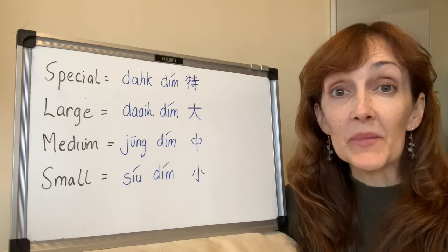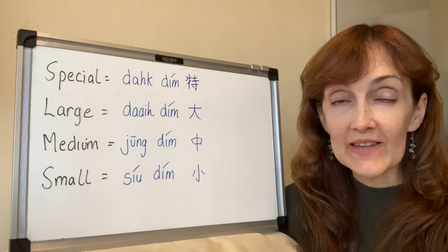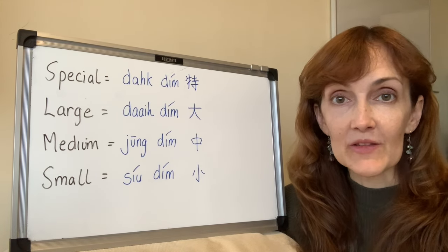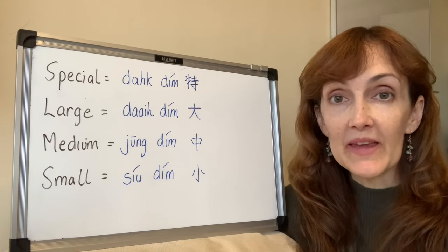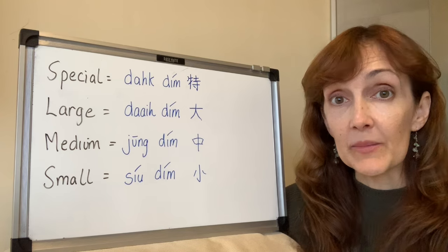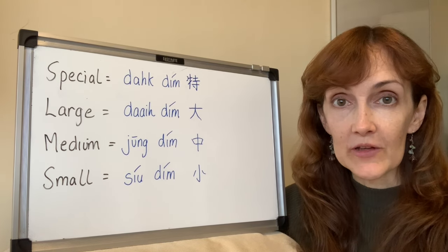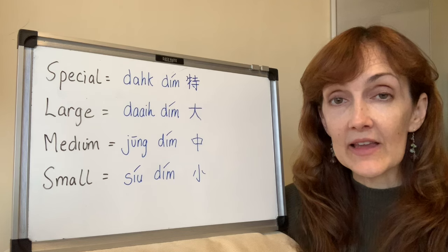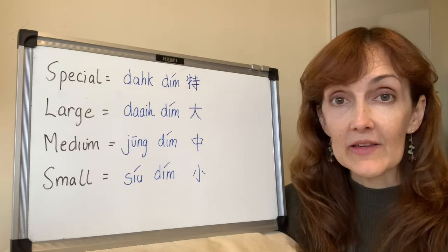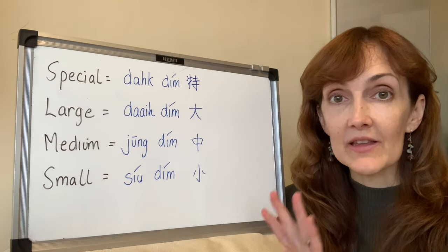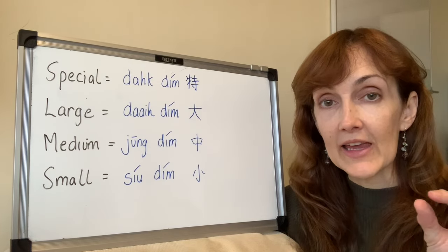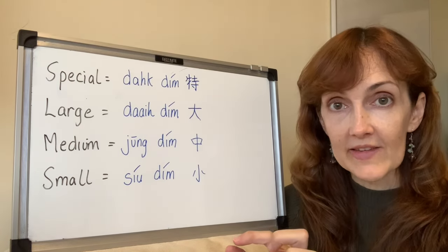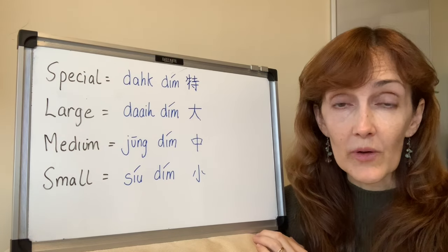Now let's talk about how your dim sum is priced. On your dim sum zi, the different colored — or maybe just white — piece of paper that lists all the different dim sum, you're not going to see an individual price next to each one. The way it's done is that a character is placed next to each item, and somewhere on the dim sum zi, you'll find a line that takes that character and gives it a price. It's quite a clever way to do it.